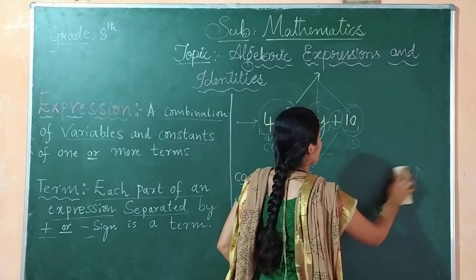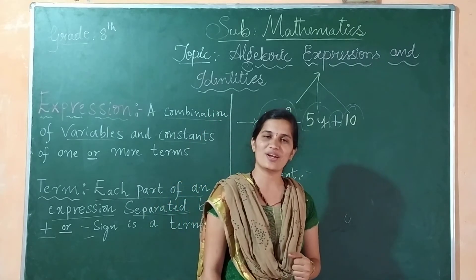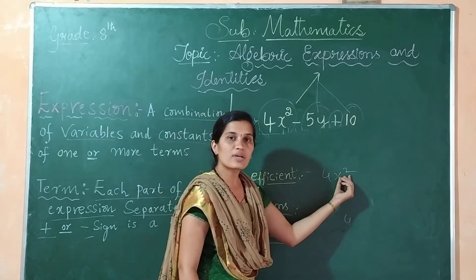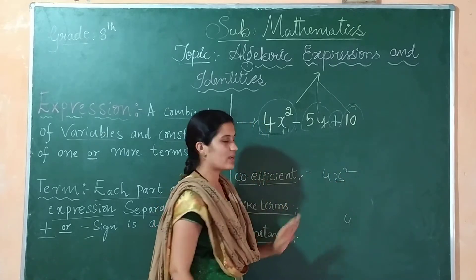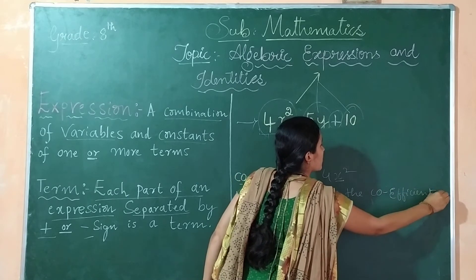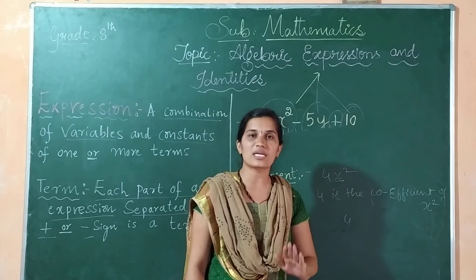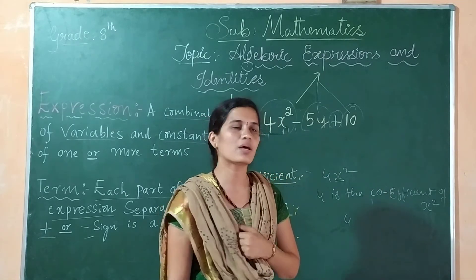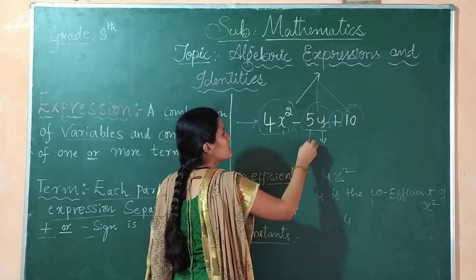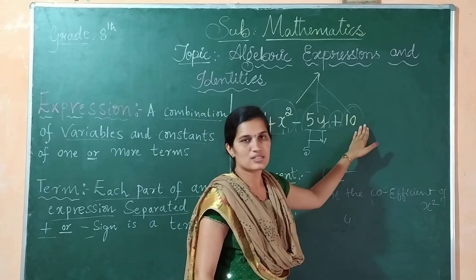Now we should learn about what is coefficient. Coefficient means numbers along with the variables — that is something called a coefficient. Take the first term 4x². What is the coefficient of x²? 4 is the coefficient of x². Every numerical value which is combined with the variable itself is called a coefficient. Here it is 5y, and the coefficient of y is 5. Here it is only 10 — there is no variable, so 10 itself is a coefficient.